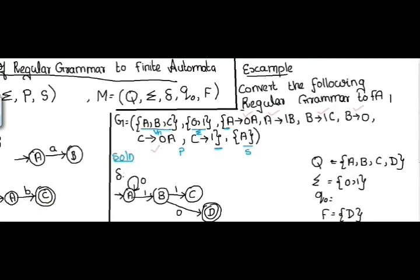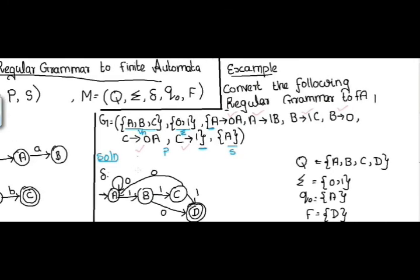Moving to the next productions: C with input 0 gives next state A; and C with input 1 moves to the final state. The initial state is A. So for this regular grammar I have constructed the corresponding finite automaton, with the transition diagram complete.